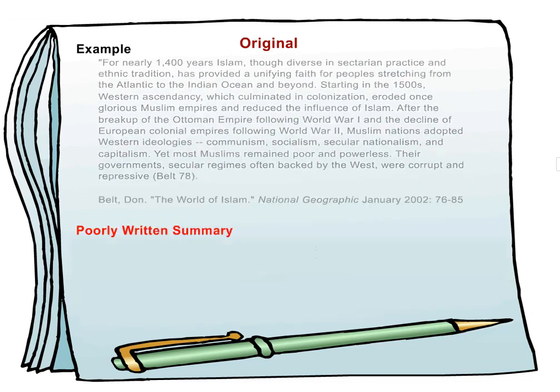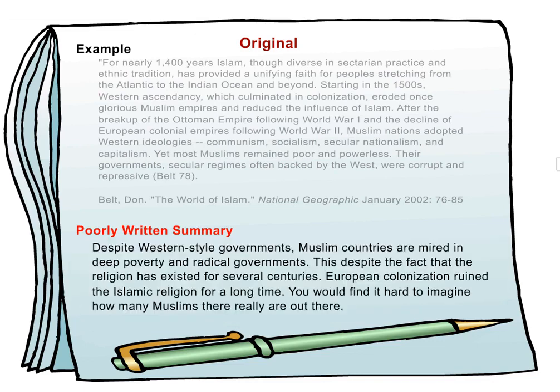Poorly written summary. Despite Western-style governments, Muslim countries are mired in deep poverty and radical governments. This despite the fact that the religion has existed for several centuries. European colonization ruined the Islamic religion for a long time. You would find it hard to imagine how many Muslims there really are out there.